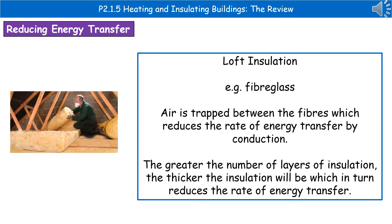The first insulation method is also one of the most cost-effective ways, which is loft insulation. Quite often this is a fiberglass material, as you can see in the picture. The way this works is that air is trapped between the fibers, which reduces the rate of energy transfer by conduction. A greater number of layers, or thicker insulation, will reduce the rate of energy transfer to a greater extent.